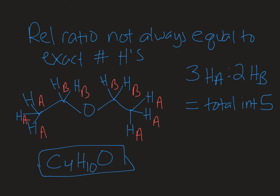my total integration given the values that I just calculated is 5, right? So there's 3 HAs to 2 HBs. That's the relative ratio.